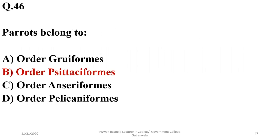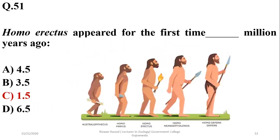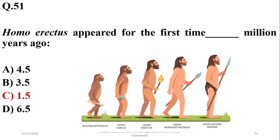Question number 51 is about the evolution of humans. Homo erectus appeared for the first time — different books may state different facts, but it is 1.5 to 2 million years ago that Homo erectus appeared for the first time from Homo habilis. So the right option will be C.